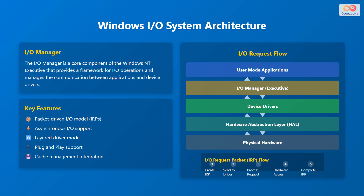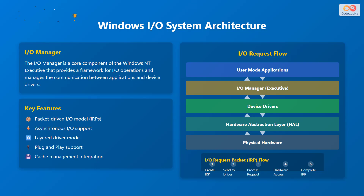The Windows Input-Output System architecture is managed by the Input-Output Manager, a core component of the Windows NT Executive. The Input-Output Manager provides a framework for input-output operations and manages the communication between applications and device drivers. Key features include the packet-driven input-output model using input-output request packets, or IRPs, asynchronous input-output support, layered driver model, plug-and-play support, and cache management integration. The diagram illustrates the input-output request flow from user mode applications through the input-output manager, device drivers, the HAL, and finally to the physical hardware. The IRP flow involves creating a packet, sending it to the driver, processing the request, accessing the hardware, and completing the IRP.